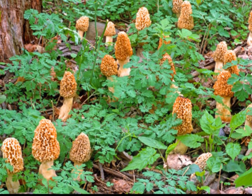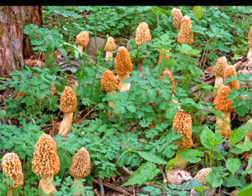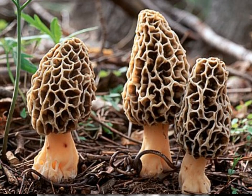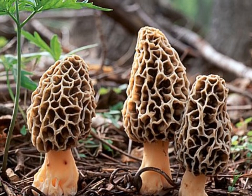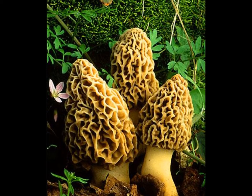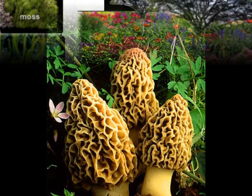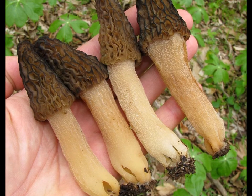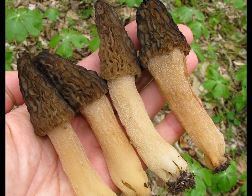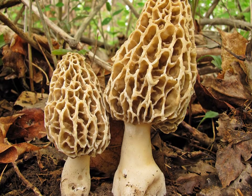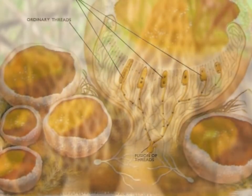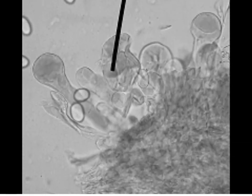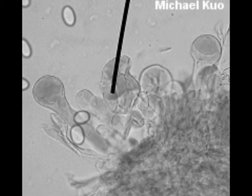Now that we know the taxonomy hierarchy, let's learn some descriptions of what these categories mean. The domain is Eukarya, which contains membrane-bound organelles and a nucleus with DNA. The kingdom, as mentioned, is Fungi — non-vascular organisms that reproduce via spores. The phylum is Ascomycota, a sac fungi with an ascus. The class is Pezizomycetes, an apothecial fungi, which means that it produces and releases spores. The order is Pezizales, and it has an ascus.